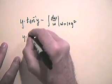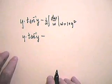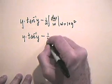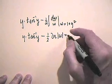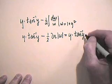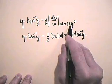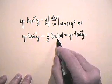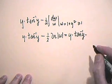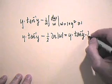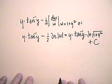We get y tan⁻¹(y) minus 1/2 integral dw over w after substituting. The integral of dw/w is the natural log absolute value of w. So we have y tan⁻¹(y) minus — don't forget that factor of one half — minus 1/2 natural log of w, which is 1 plus y squared. Since 1+y² is always greater than or equal to 1, we can drop the absolute value. And 1/2 times the log equals log of the square root, giving natural log of √(1+y²). Add the big capital C.